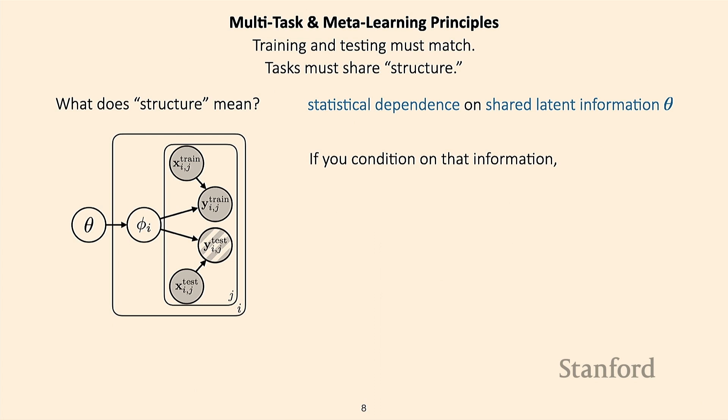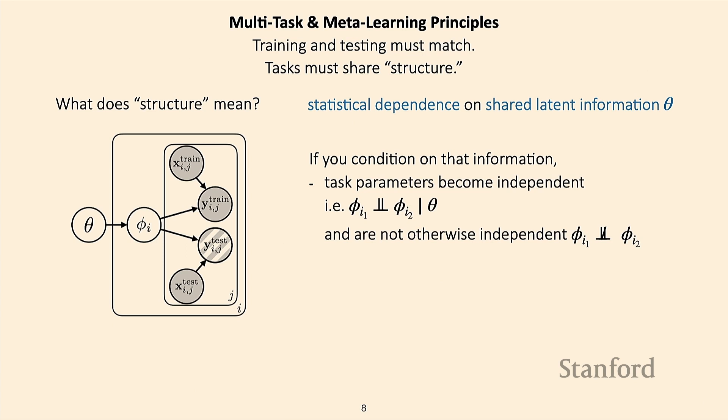If we condition on the shared information theta, the task parameters become conditionally independent. As a result, conditioning on theta gives you information about phi_i, so the distribution over phi_i will have a lower entropy — less randomness — because we have some knowledge about the shared structure across the different tasks.